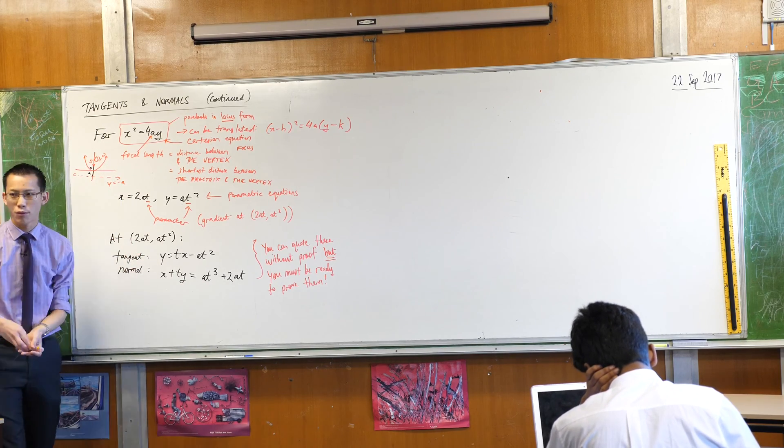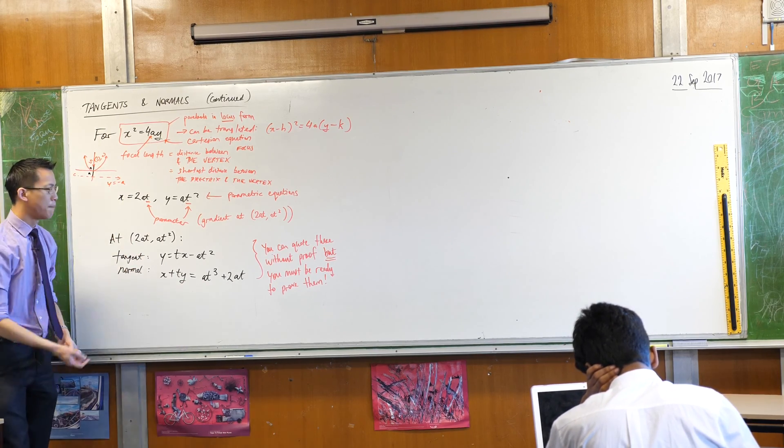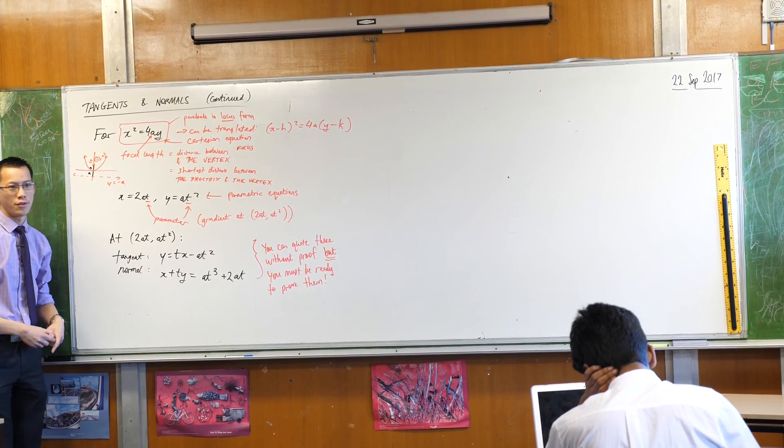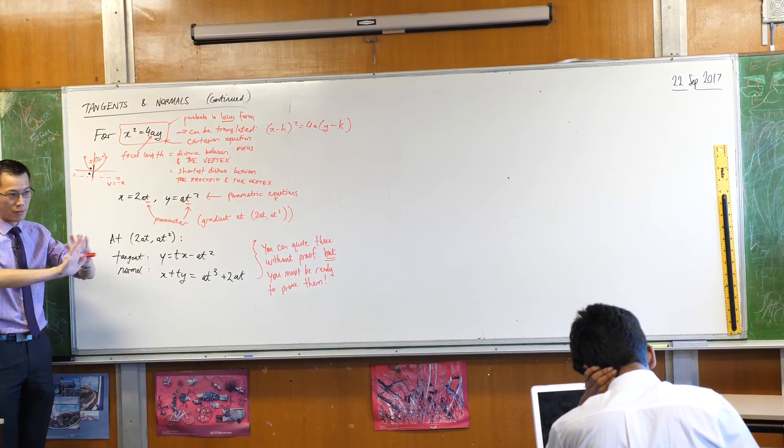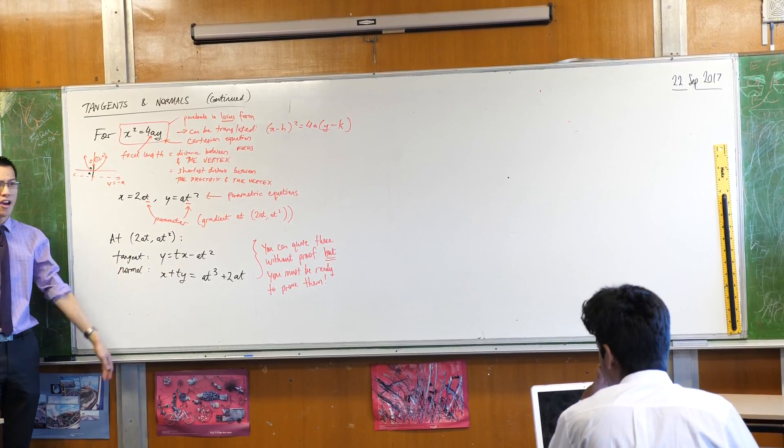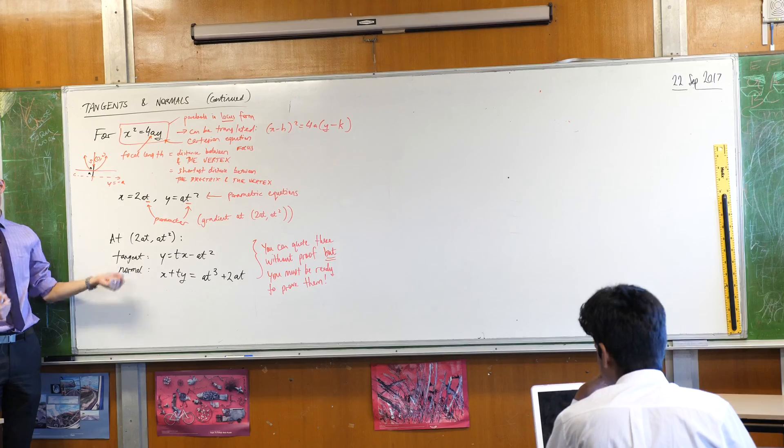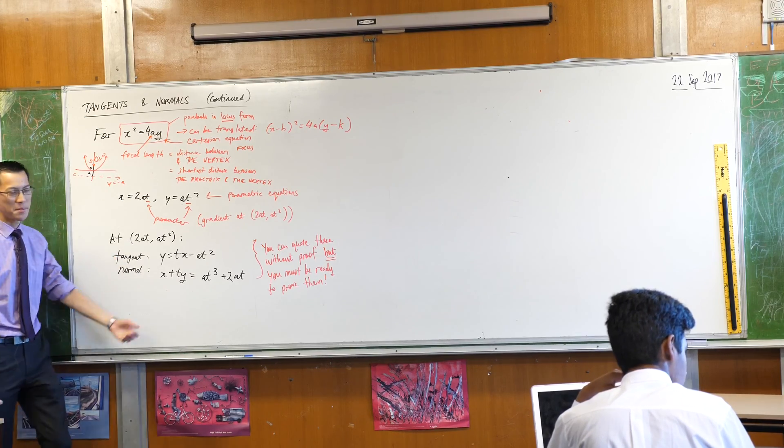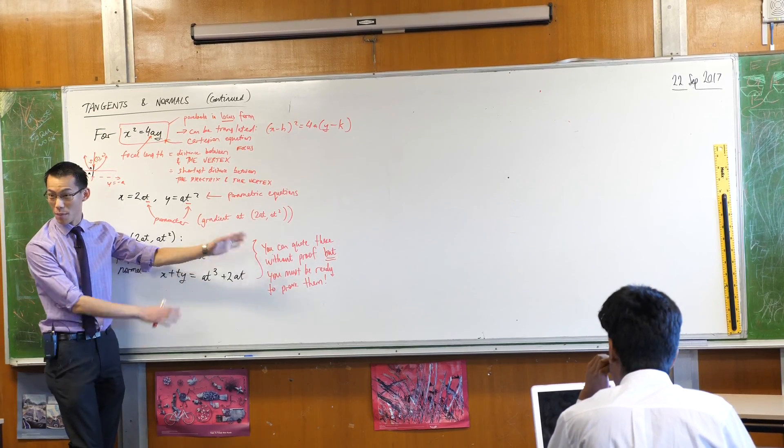And in exactly the same way, yes, you can use these. You don't have to prove them every single time, but sometimes you are required to prove them. The question will state it. It will just say prove that the equation of the tangent is this, or prove that the equation of the normal is this. Sometimes you can, and sometimes you can't. That's why I'm highlighting it.